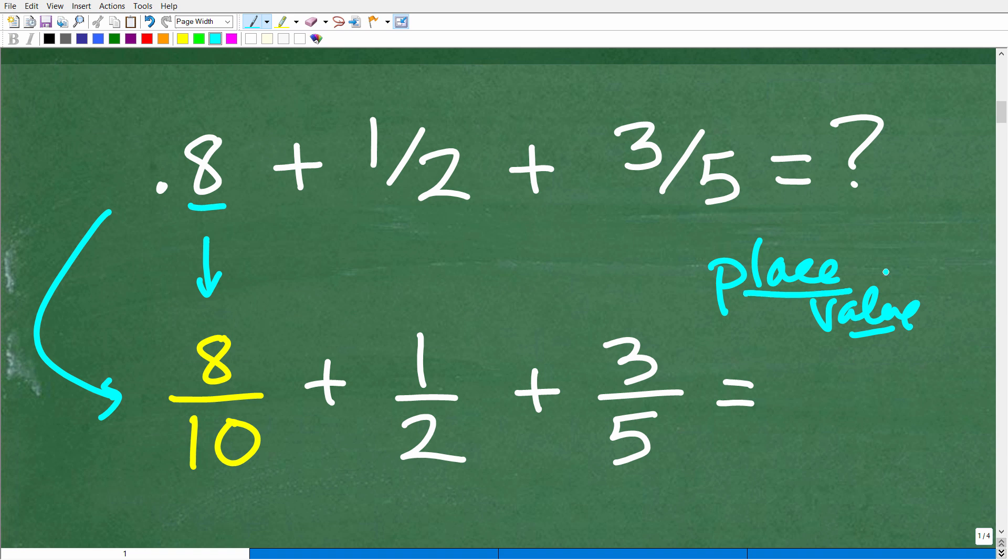Again, this is all stuff that we've probably, most of us, forgotten. Because if you were to say, a lot of you, if I said, what is this decimal? What is this value? I would say the majority of people would say, oh, this is 0.8. Now, some of you would call this 8 tenths. And for those of you that actually can describe this decimal in terms of place value, well, that is fantastic.